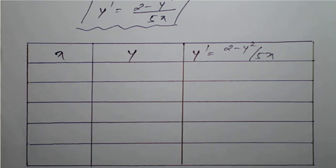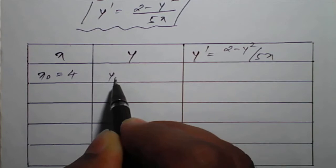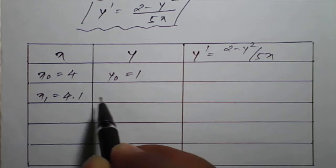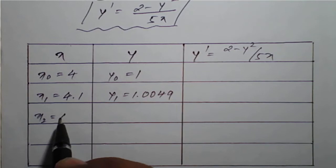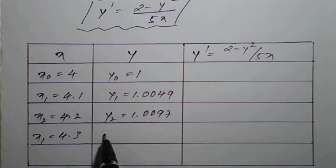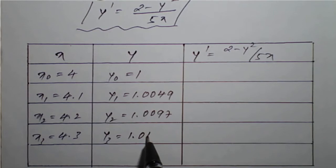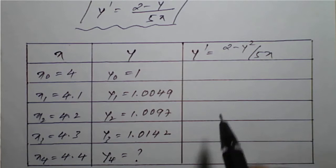So, y dash is nothing but (2 minus y squared) divided by 5x. We fill in the table values: x₀ is 4, y₀ is 1; x₁ is 4.1, y₁ is 1.0049; x₂ is 4.2, y₂ is 1.0097; x₃ is 4.3, y₃ is 1.0142. We need to find x₄ equal to 4.4 and calculate y₄.